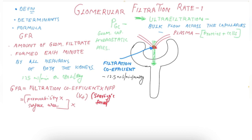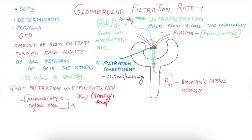There is glomerular capillary hydrostatic pressure, which is the main pressure favoring filtration — labeled D — and its value is 60 mmHg. Then there is the Bowman's capsule hydrostatic pressure, labeled B, which opposes filtration. Measured by micropipettes, its value has been calculated to be 18 mmHg.